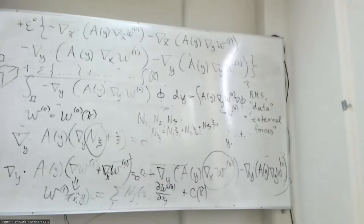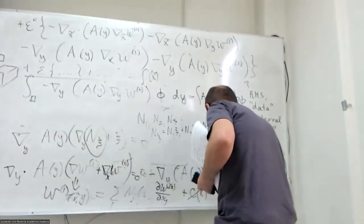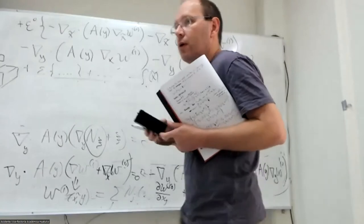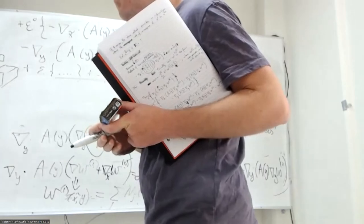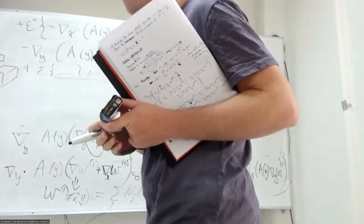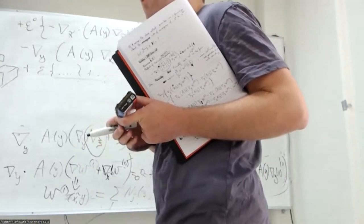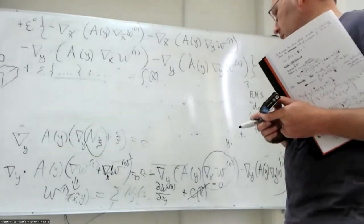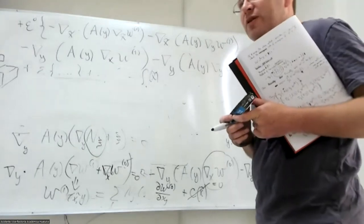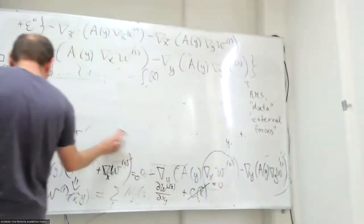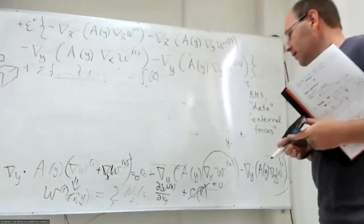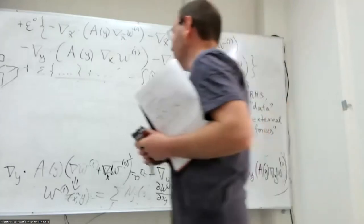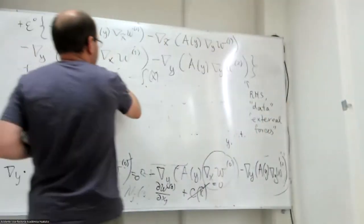It turns out that without loss of generality we can set the constant to zero, and this leads to a valid expansion. So at this stage I could have just sought the solution in this form directly. And then finally, substituting into the next order equation at ε^0 gives the condition for solvability.